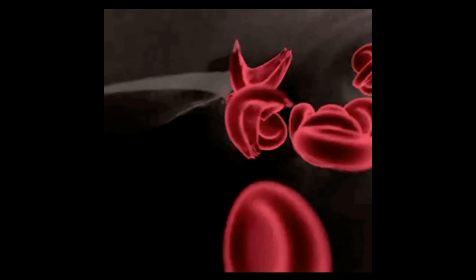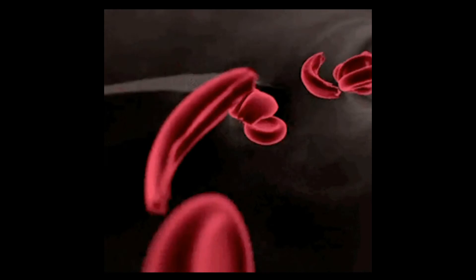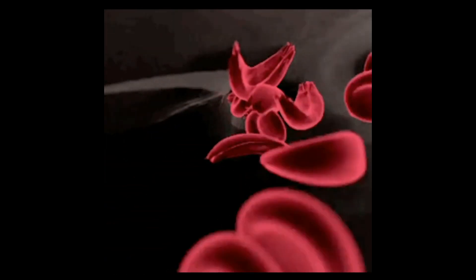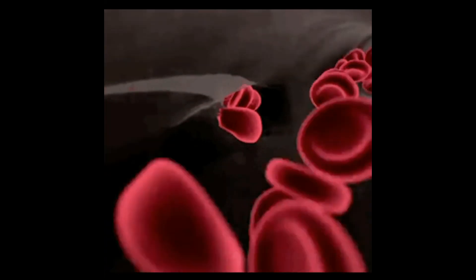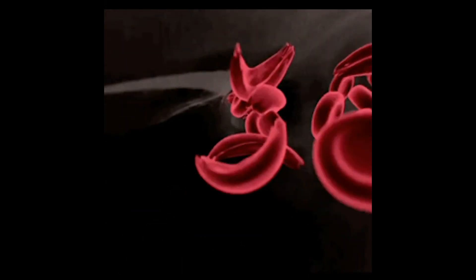The red cells form a sickle shape. The membrane becomes brittle. The cells are fragile, break easily, and stick to the interior of the blood vessels. The cells block the normal blood flow, causing pain, stroke, and cardiovascular complications.